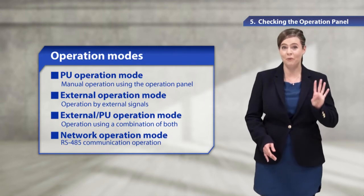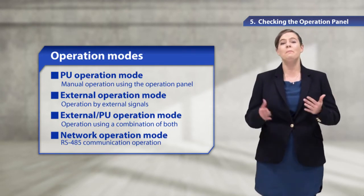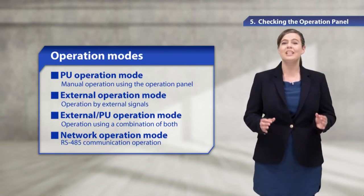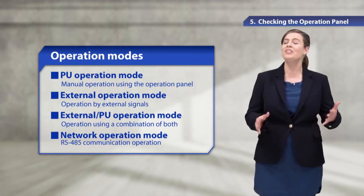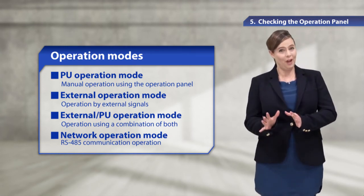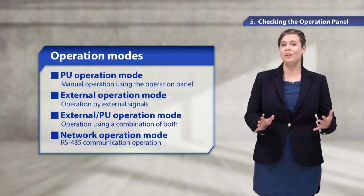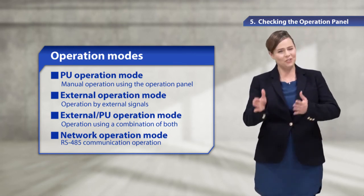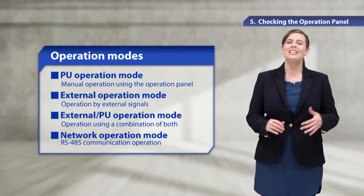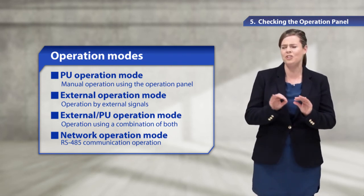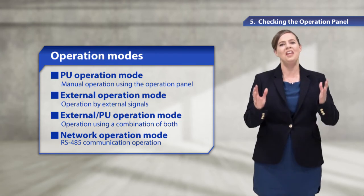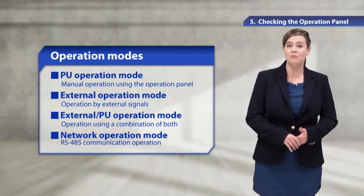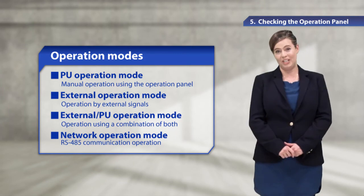I'll first introduce the operation modes. The inverter has four operation modes. The PU operation mode is for manual operation using the operation panel. The external operation mode is for operation by using external signals. The external PU operation mode is for operation using a combination of both. And the network operation mode is for the RS-485 communication operation.